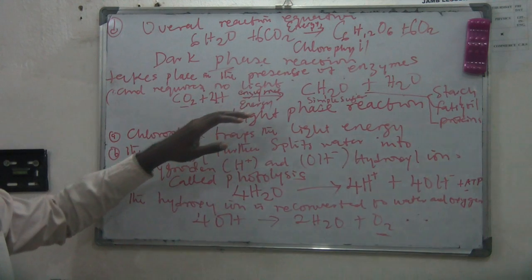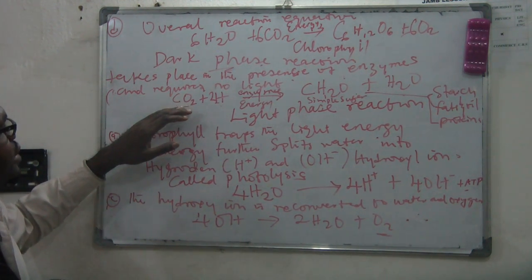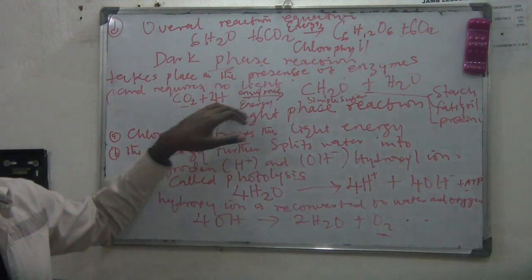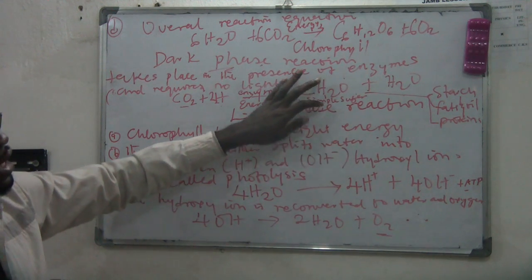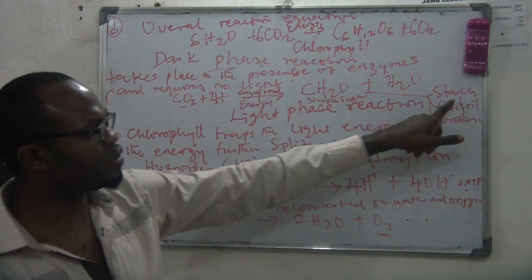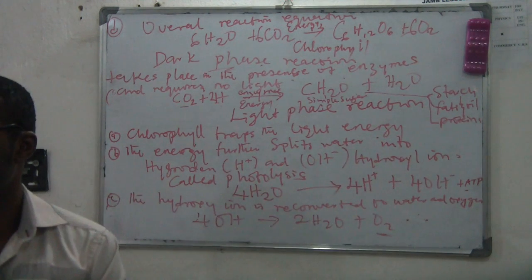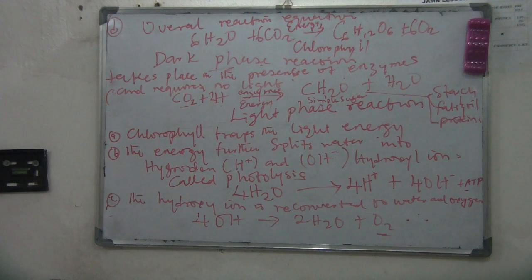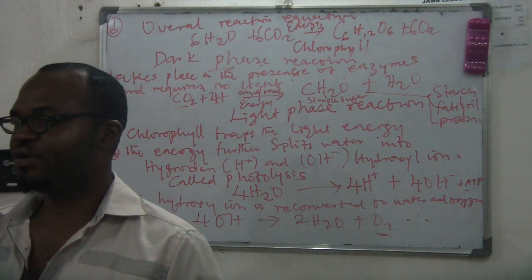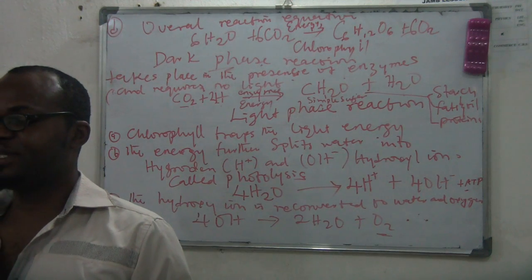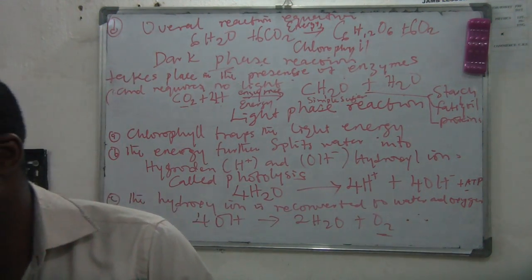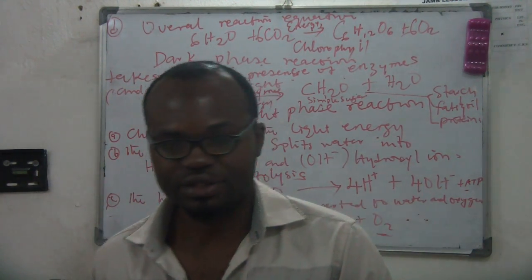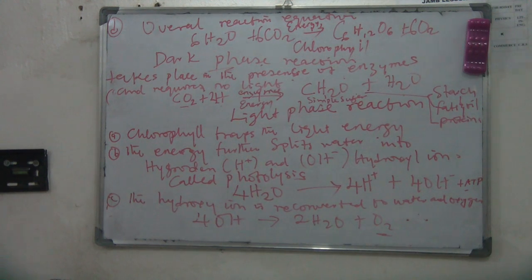In the dark phase, carbon dioxide reacts with hydrogen atoms to form simple sugar, which can then be synthesized to produce starch, fats and oils, and proteins. The light phase needs light to happen, whereas the dark phase does not need light. Those are the two phases of photosynthesis.